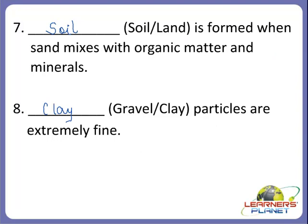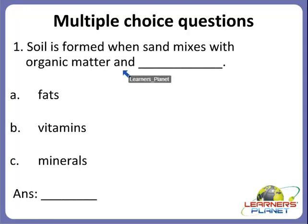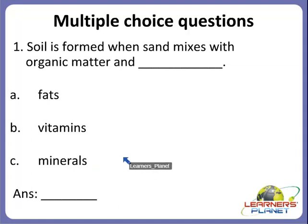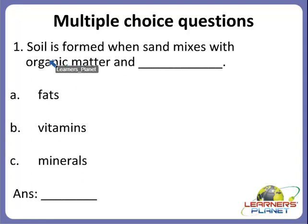Alright, children. I hope you are clear with this activity. Now we will move on to the next activity — multiple choice questions. I'll read the question for you and you have to guess the answer from the given options. The answer will either be A, B, or C. Just try to think and guess the correct answer — you can do it.